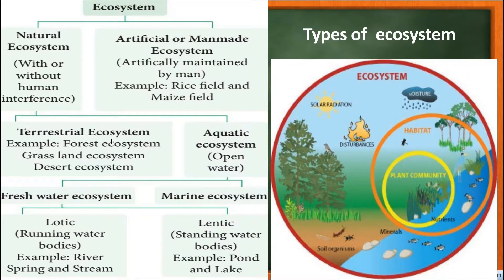Terrestrial ecosystems — examples include forest ecosystem, grassland ecosystem and desert ecosystem — lie on the land. Aquatic ecosystems are present in open water and are classified into freshwater ecosystem and marine ecosystem. Freshwater ecosystem comprises lakes, ponds, ditches, rivers, etc.